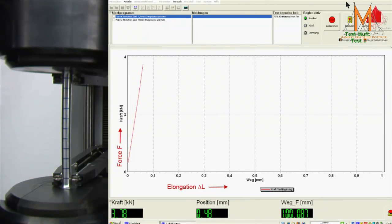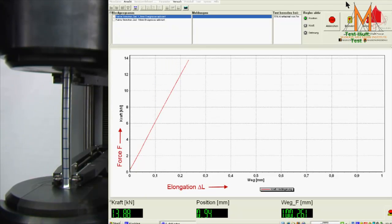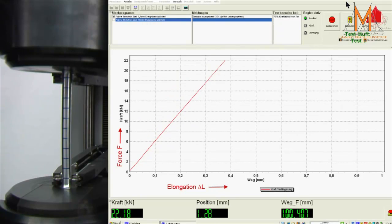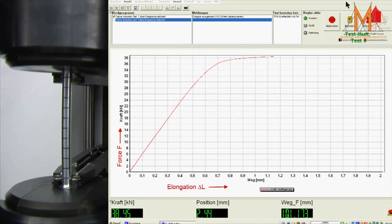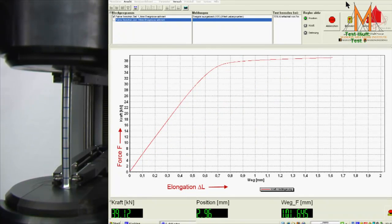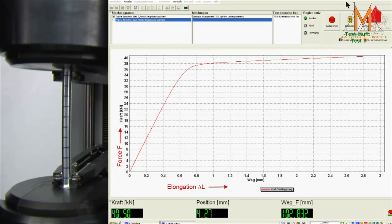The initial linear curve in the force elongation diagram again shows the elastic behaviour of the material. But this time, the end of the elastic area is not revealed by a sudden drop of force or any distinct change. There is a smooth and gradual transition from linear elastic behaviour to plastic deformation.